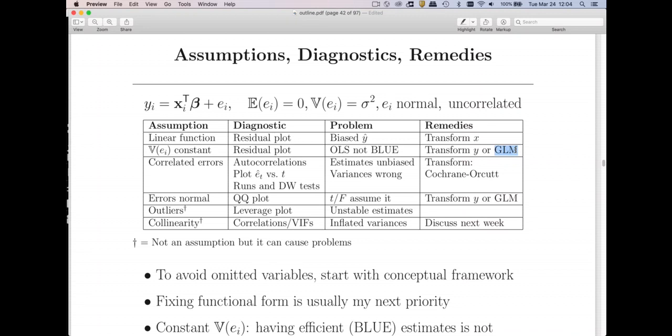So we're going to see that very soon when we get to logistic regression. Other generalized linear models are like the Poisson regression model that also take care of this. So you can either transform your Y, that's a simple approach. Probably a better approach is to use a GLM when you can do that.